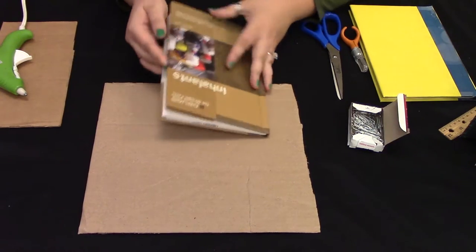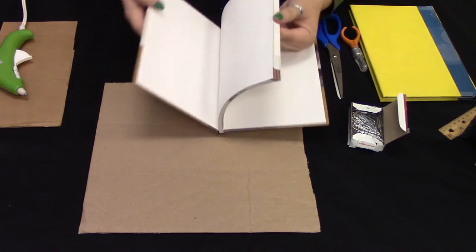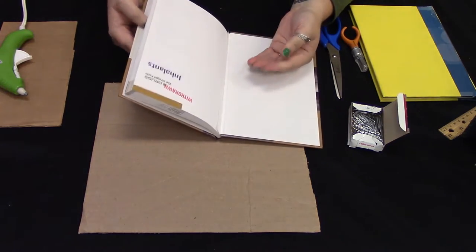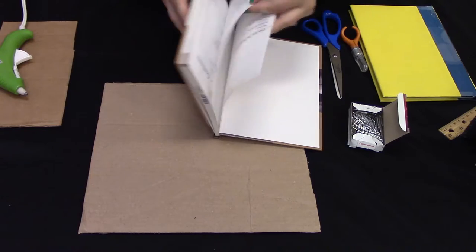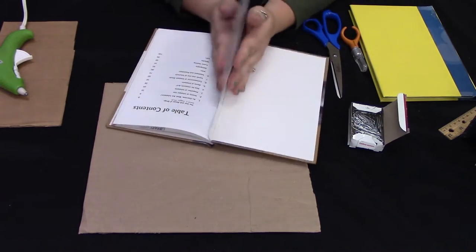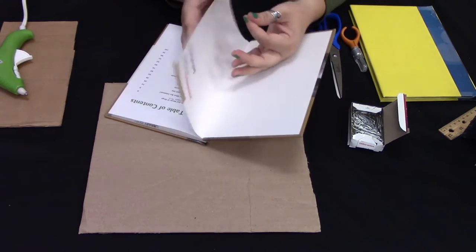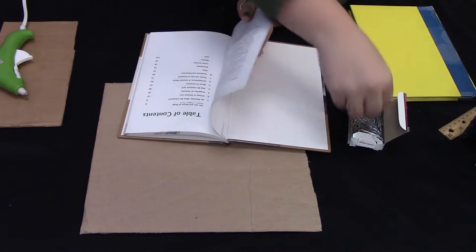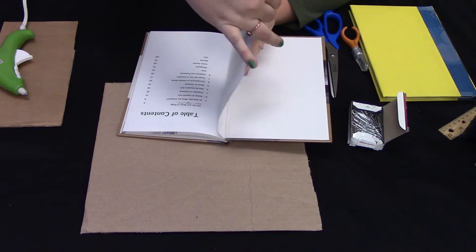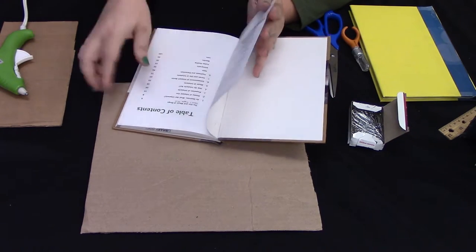The first thing you want to do is decide how many pockets you want to have in your folder. I found it best to have at least two pages for each dividing section, so I will go ahead and paperclip those sections together on each end.